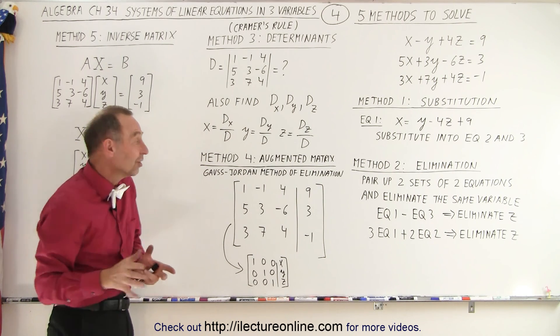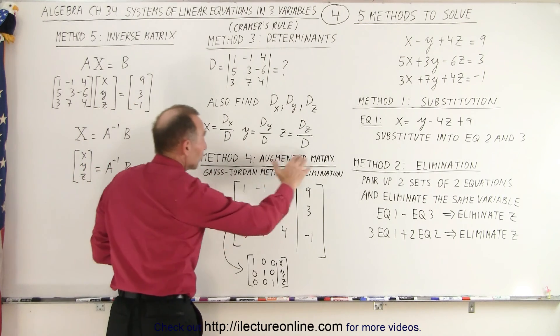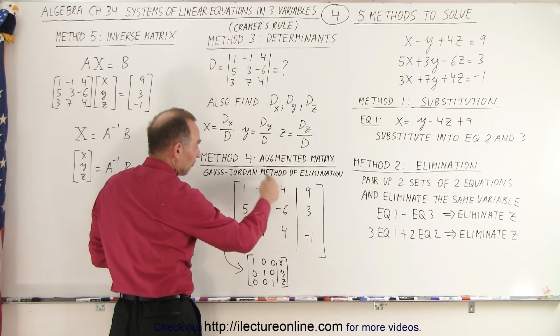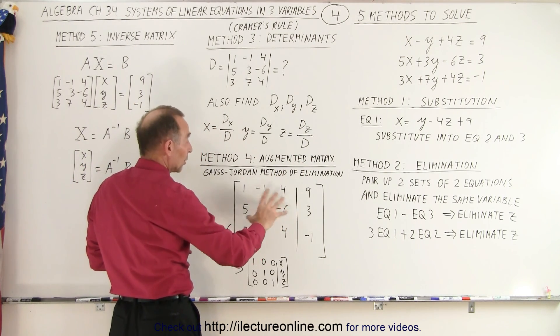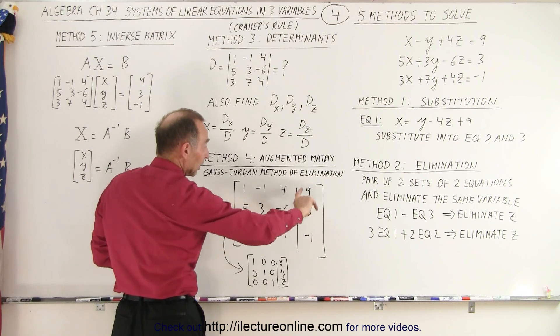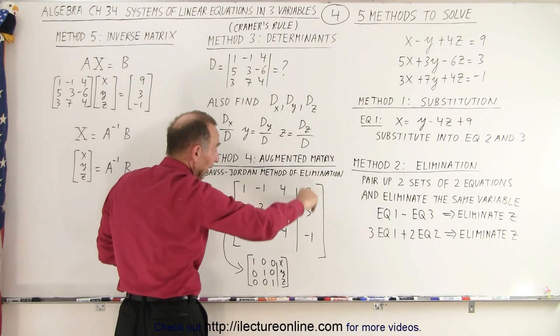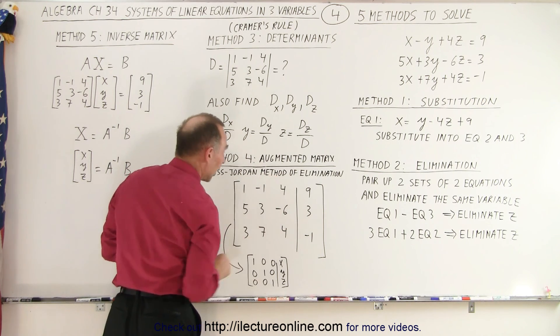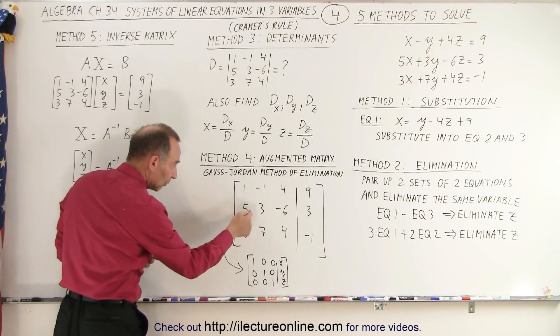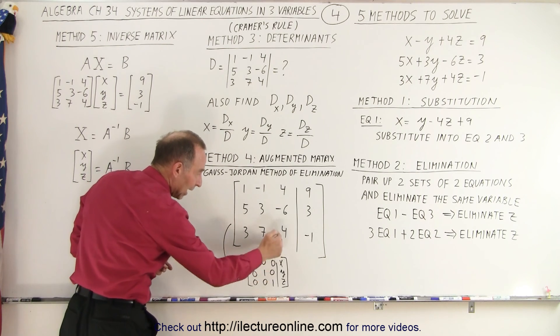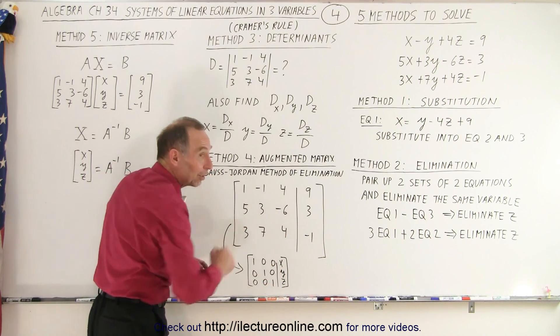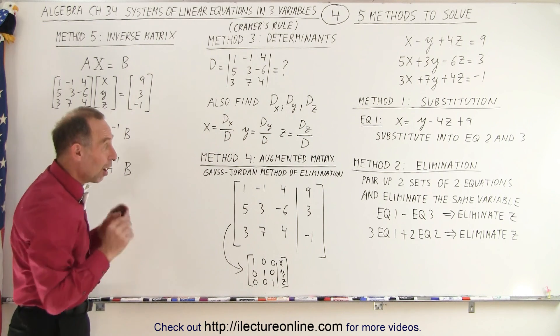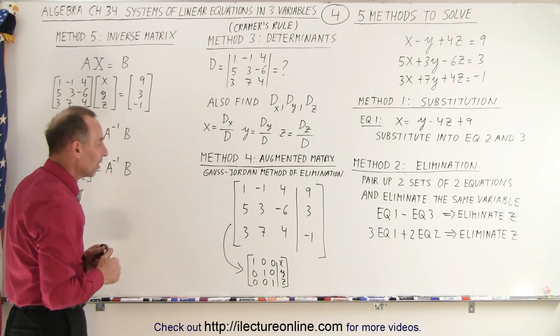Or we can use matrices, and in particular, the augmented matrix. So in other words, we put the coefficients of the x, y, z's in the three equations over here, put a line there, and then we put the three constants on the right side of the equal sign. And then we take this through the method of Gauss-Jordan method of elimination, converting this into this format, and the numbers we end up on the right side here, that will end up being the x, y, and z coordinates of the point where the three planes intersect.